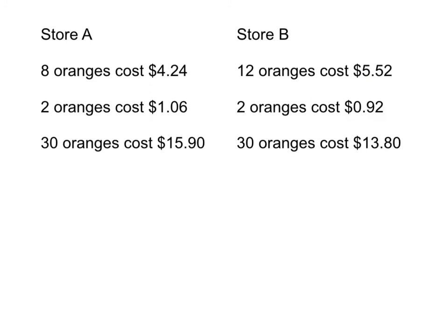Let's look at all the information we've gathered now. We know the price for 2 oranges for each store, and we know the price for 30 oranges for each store. Does it look like it's easier to compare the price when you have the same number of units? We can clearly see now which store is cheaper based on the same number of oranges.